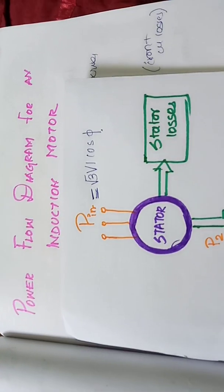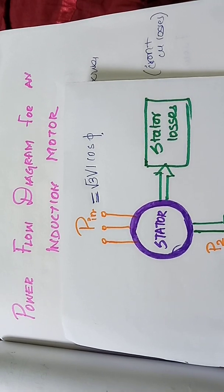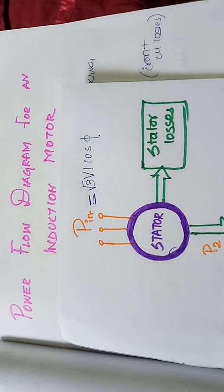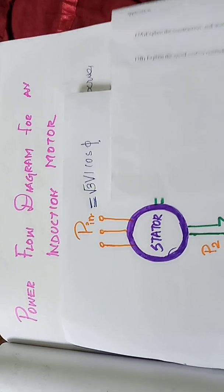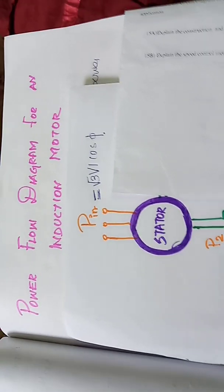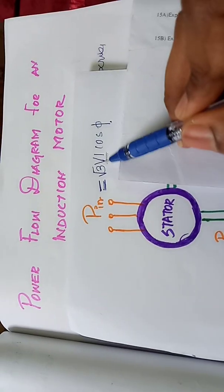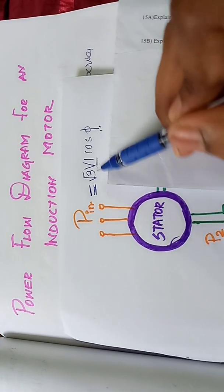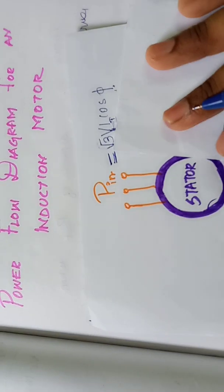Here we will talk about the power flow diagram. We will consider 230 volts and use AC power. We calculate AC power using V·I·cosφ. But we use 3-phase power, so in terms of line voltage it becomes √3·V·I·cosφ. So the input is electrical power.